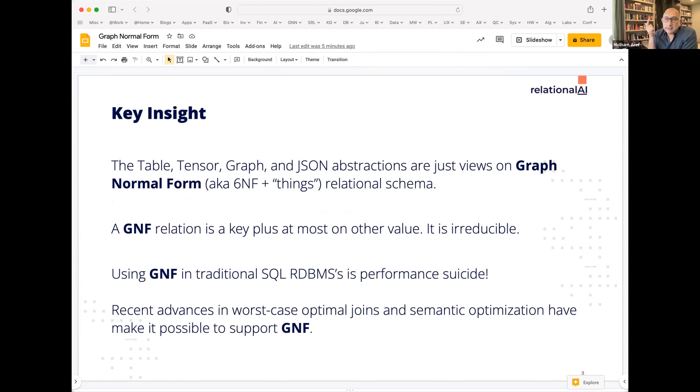So our key insight is that the table, the tensor, the graph, the JSON and other abstractions are just views on a graph normal form. And graph normal form is just sixth normal form plus things, not strings. A graph normal form relation is a key plus at most one other value. It's irreducible. You cannot normalize it further. And historically using graph normal form in traditional SQL databases has been performance suicide. The big knock on the relational model since its inception has been performance, will it ever perform? And so one way around that was to pre-join things into wider tables to avoid having to do joins.